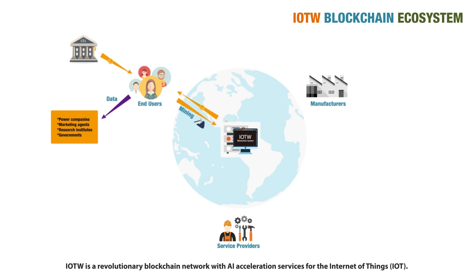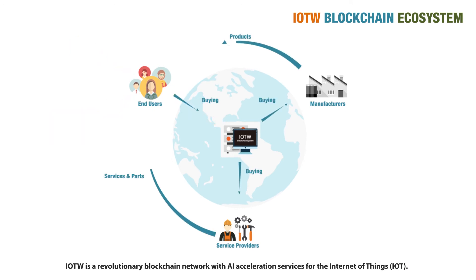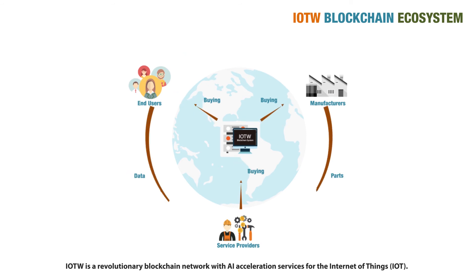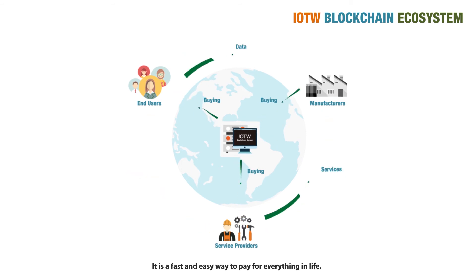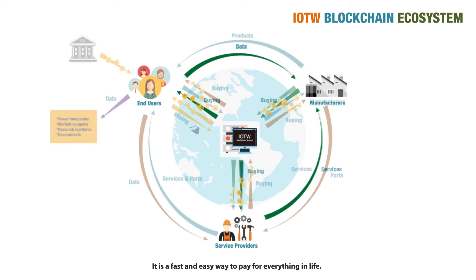IOTW is a revolutionary blockchain network with AI acceleration services for the internet of things. It is a fast and easy way to pay for everything in life.